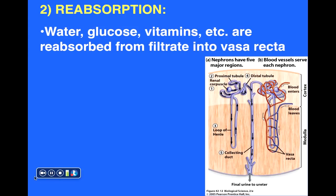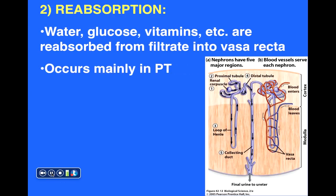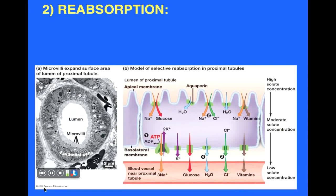The next major step is reabsorption. This is where most of the water, glucose, vitamins, and so forth are reabsorbed from the filtrate — the liquid portion captured in the renal corpuscle — back into the vasa recta. The vasa recta is an extensive system of blood vessels that surrounds and interacts with the nephrons themselves, retaining important components within our bodies. Reabsorption can occur in both the proximal and distal tubule, but mainly occurs in the proximal tubule.